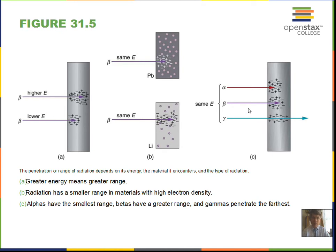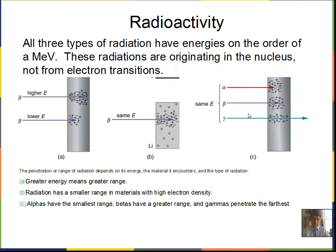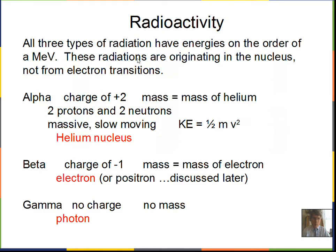Alpha, betas, and gammas — positive, negative, and no charge. These radioactivity energies are measured in the order of a million electron volts. The atom's electron transitions are in the order of an electron volt — that's what we were working with for the hydrogen spectrum, around two electron volts. These nuclear radiations are a million times more energetic. These radiations are coming from the nucleus. There's not enough energy in the electron shells to account for millions of electron volts.